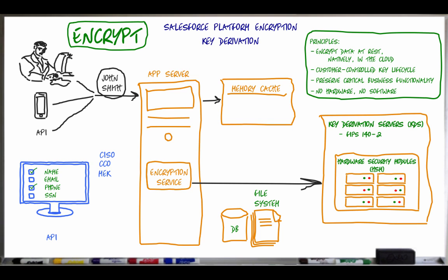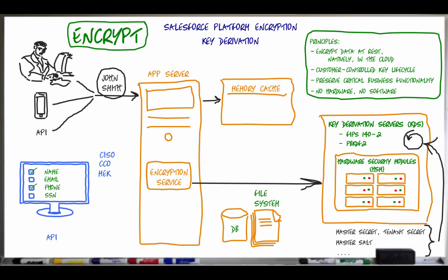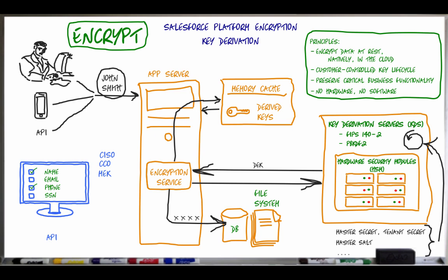The key derivation server, or KDS, will then use the release-specific master secret, along with the tenant secret and other inputs such as the master salt, length of the key — which is 256 bits — and number of iterations, and generate the encryption key. The number of iterations is set to 15,000. The data encryption key, or DEK, secured and wrapped with a dedicated application server's transit key, is then sent to the application server, where it is cached in memory to serve future requests. Shield Platform Encryption uses the Java Cryptography Extension, or JCE, to encrypt and decrypt data. Specifically, it uses the Advanced Encryption Standard, AES-256, in CBC mode with randomized IV and PKCS5 for padding. The JCE class SecureRandom is used to generate the IV. The data is then stored encrypted at rest in the Salesforce database.